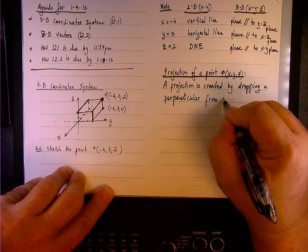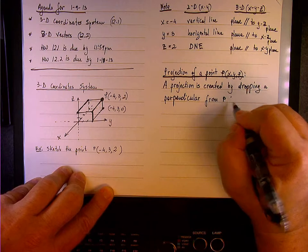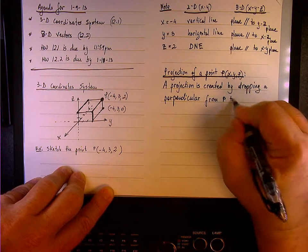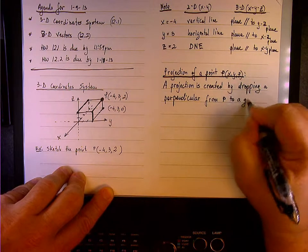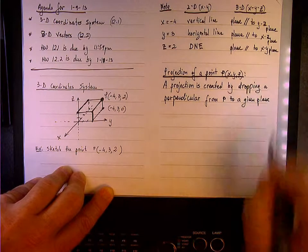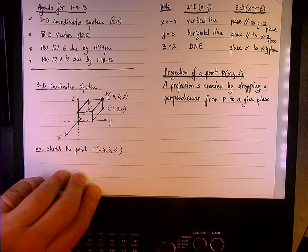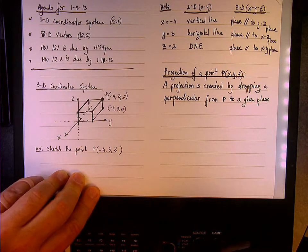So we drop a perpendicular line from P to a given plane, or on a given plane. Yeah, it's a perpendicular line from a point.